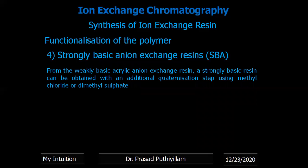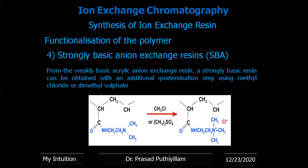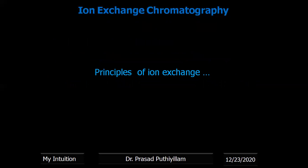A weakly basic acrylic anion exchange resin can also be converted into a strongly basic anion exchange resin. It is treated with methyl chloride or dimethyl sulfate, and the corresponding strongly basic anion exchange resin product is obtained. The principles of ion exchange resins and other topics will be covered in coming classes.